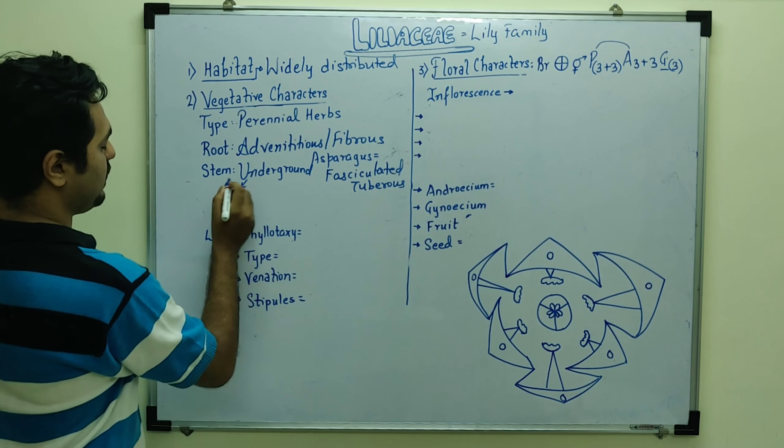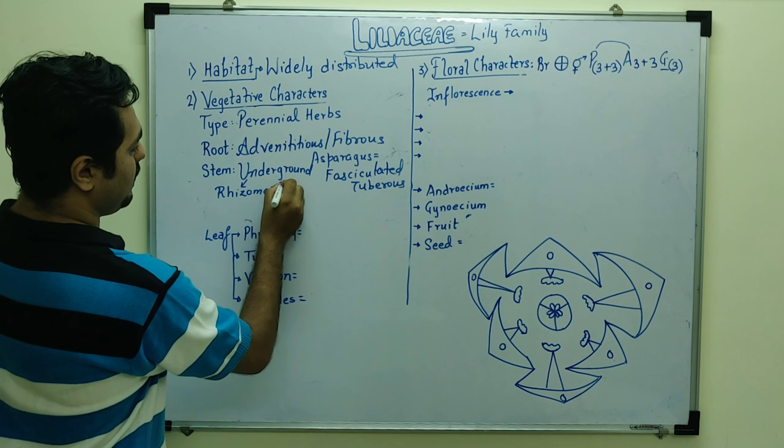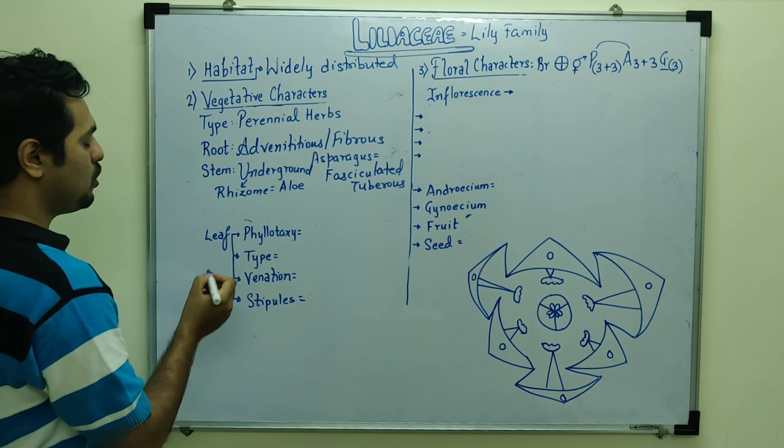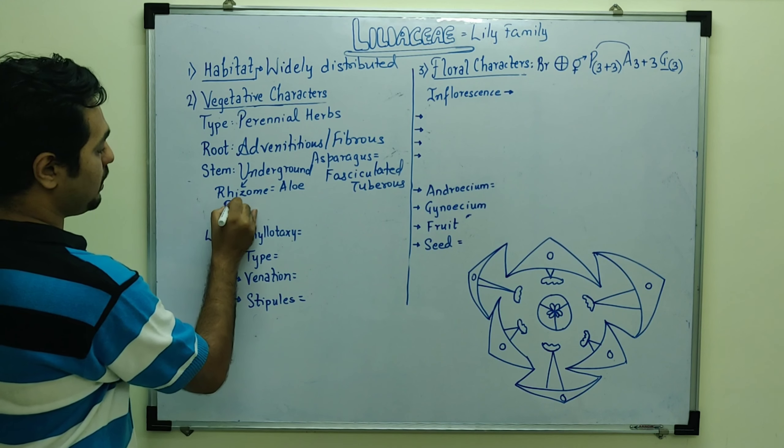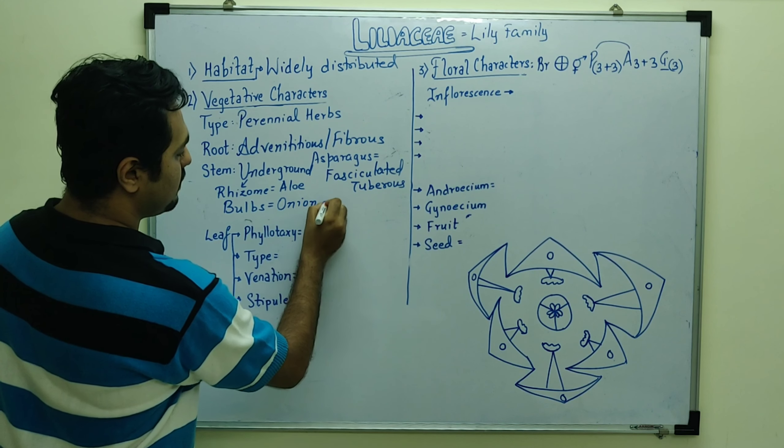Stem, which will be mainly underground stem we can see in the lily family. And this can be underground stem or in the form of rhizome. Now, rhizome we can see in aloe, aloe vera plant. It could be present as bulbs.